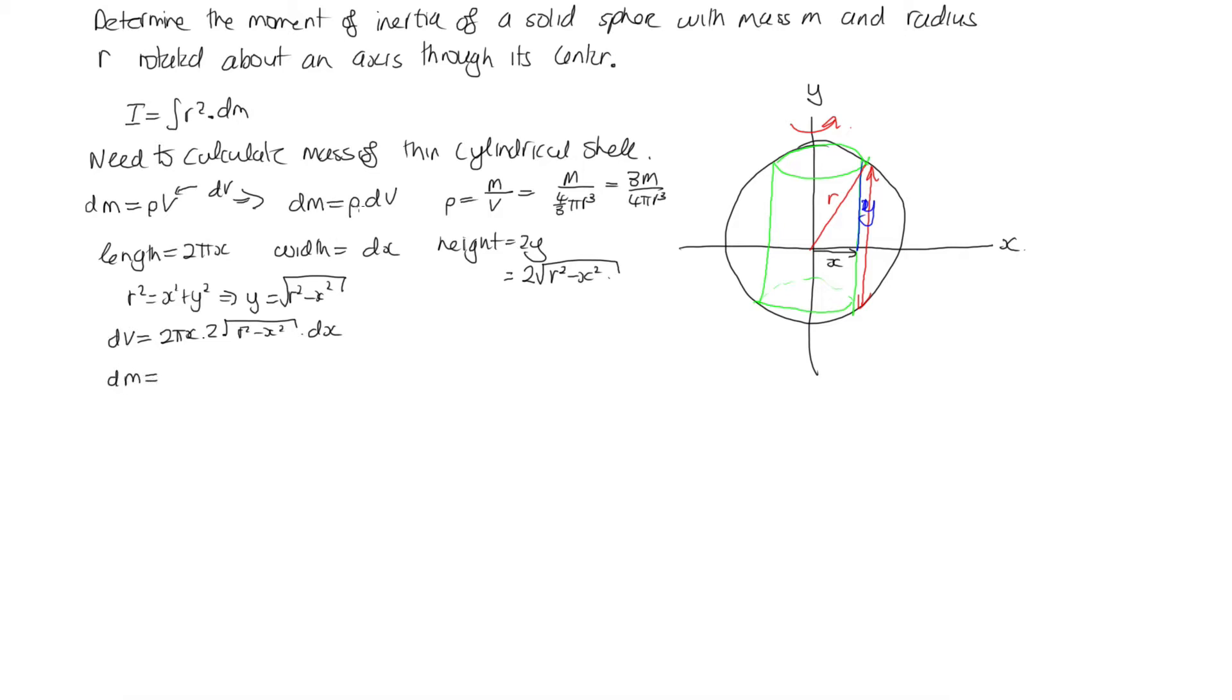So dm is equal to ρ, which is 3m over 4πr³, times dv. And dv here, let's put this 2 and 2 together, so I've got 4πx√(r² - x²) dx. So the 4π's now cancel, and I end up with 3m over r³ times x√(r² - x²) dx. So now I have an expression for dm in terms of dx.